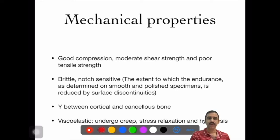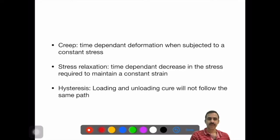What are the mechanical properties? It is good in compression, moderate in shear strength, and poor in tensile strength. It is brittle and notch sensitive. The Young's modulus of elasticity is between cancellous and cortical bone. It is viscoelastic and undergoes creep, stress relaxation, and constant hysteresis.